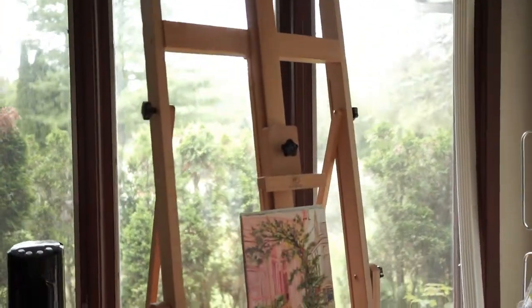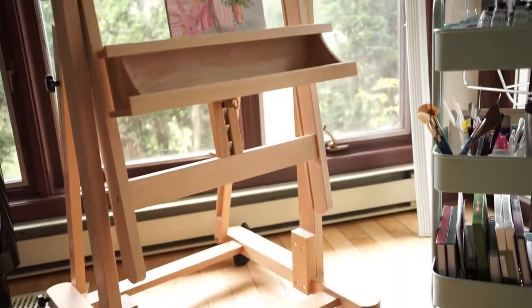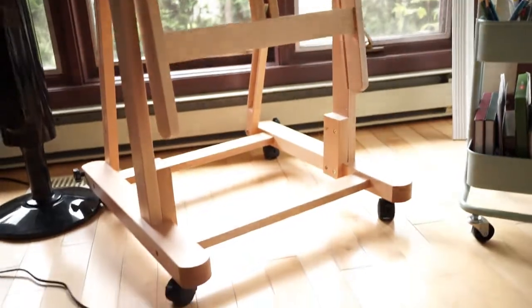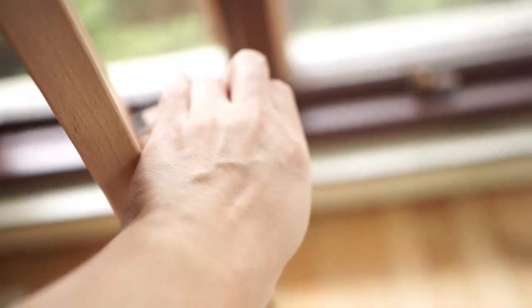Hello and this is the Atworth easel for artists. It is an H-frame easel that is very heavy-duty, made out of beech wood. It is very easily adjustable with six different knobs, two at the front, or sorry, four in the front, and also two in the back where it is adjustable and convertible to a horizontal position. The knobs are very easy to adjust.